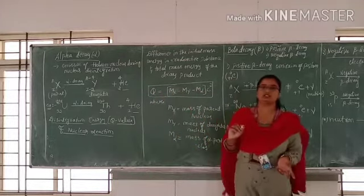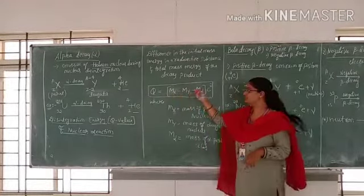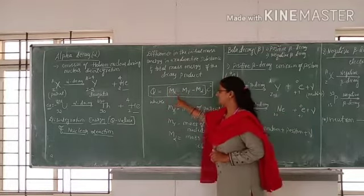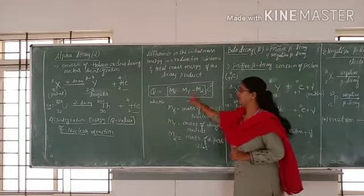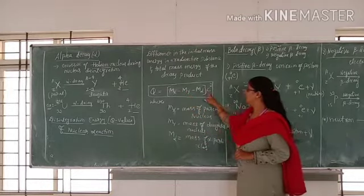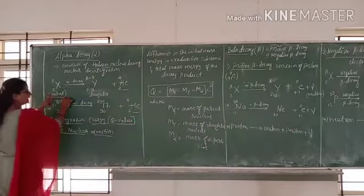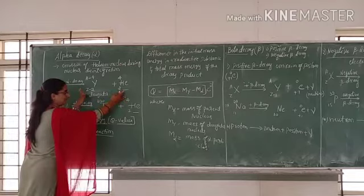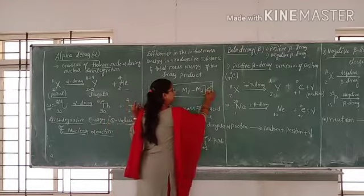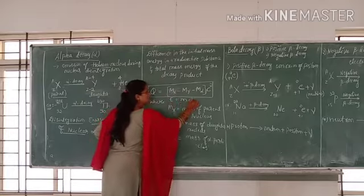Q is equal to the difference in mass energies. Using E equals mc squared, Q equals mx minus my minus m-alpha, all multiplied by c squared. Here mx is the initial parent nucleus mass, my is the daughter nucleus mass, and m-alpha is the helium nucleus mass. This gives the Q value of the radioactive disintegration energy.